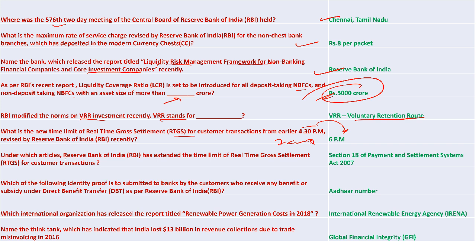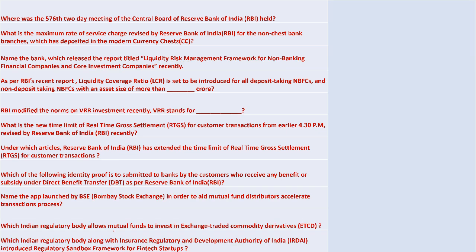Under Section 18 of the Payment and Settlement Systems Act 2007, RBI extended the time limit of RTGS for customers. Banks must submit Aadhaar number as proof to customers receiving benefits or subsidies under DBT as per RBI. IRENA released the report titled 'Renewable Power Generation Cost 2018', where India ranked as the most economical solar power generator. Global Financial Integrity, a think tank, indicated India lost 13 billion dollars in revenue due to trade misinvoicing.